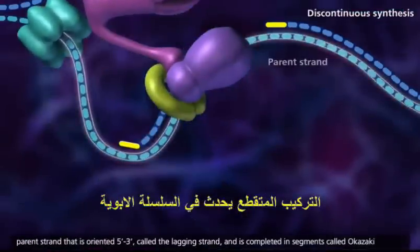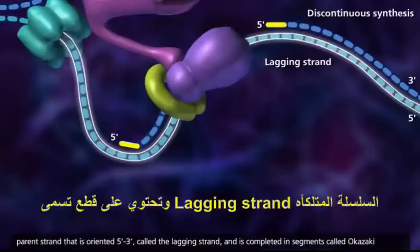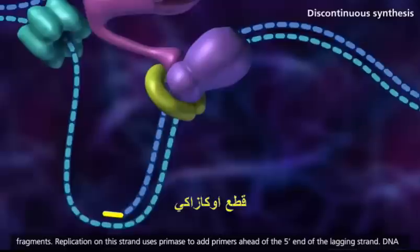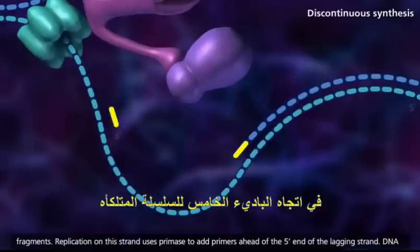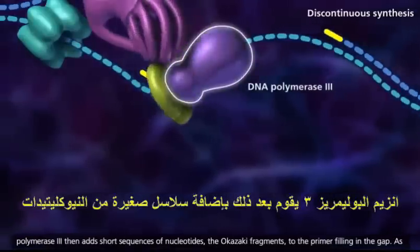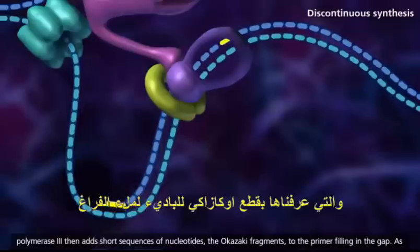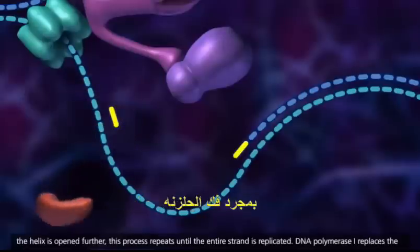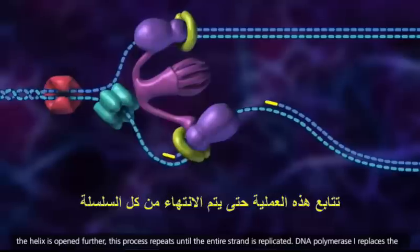Discontinuous synthesis occurs on the parent strand that is oriented 5' to 3', called the lagging strand, and is completed in segments called Okazaki fragments. Replication on this strand uses primase to add primers ahead of the 5' end of the lagging strand. DNA polymerase 3 then adds short sequences of nucleotides, the Okazaki fragments, to the primer filling in the gap. As the helix is opened further, this process repeats until the entire strand is replicated.